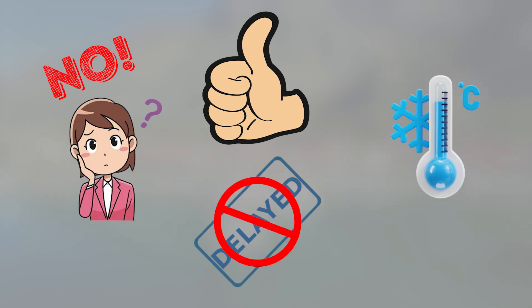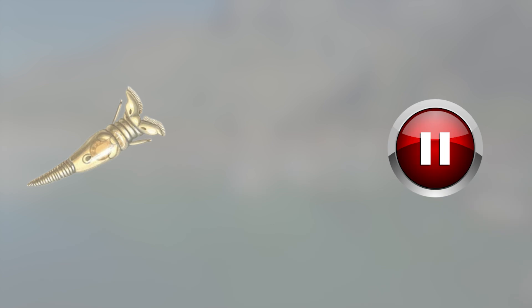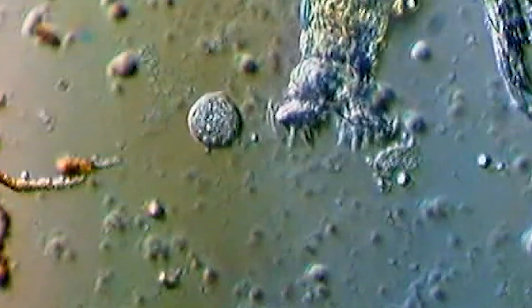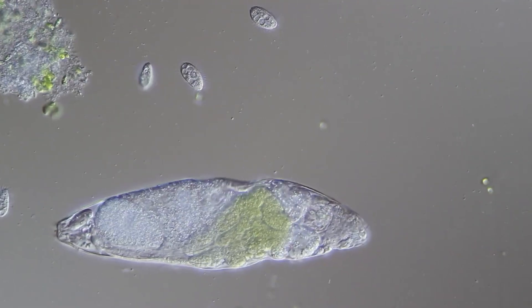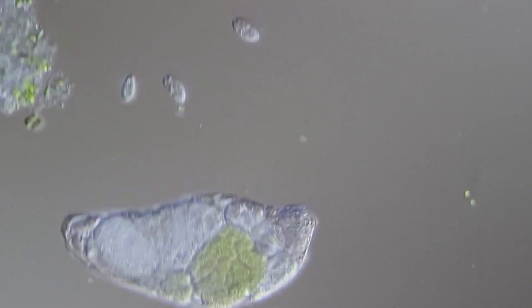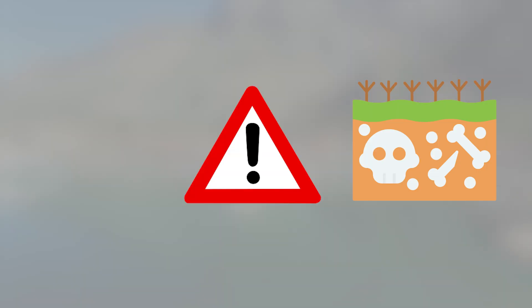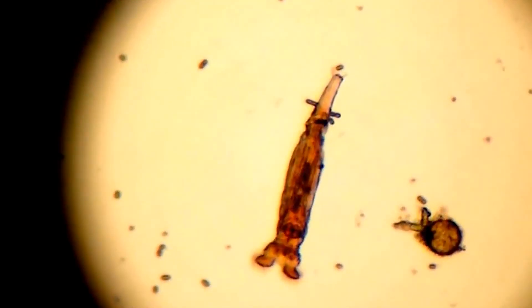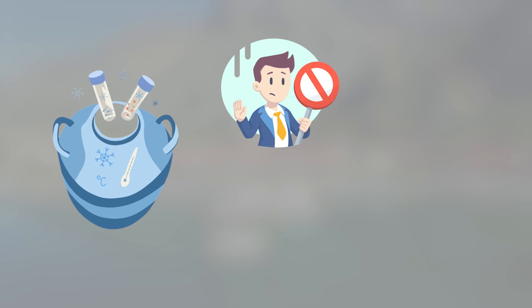There was no confusion, no delay. The rotifer acted like it had paused time, not lived through it. And that reaction raised a chilling possibility: what if some creatures aren't just surviving cold? What if they're using it intentionally, waiting out extinction-level threats until it's safe to return? And that has implications cryobiology still can't fully explain.